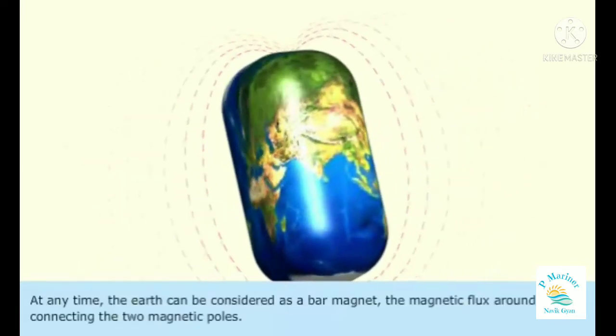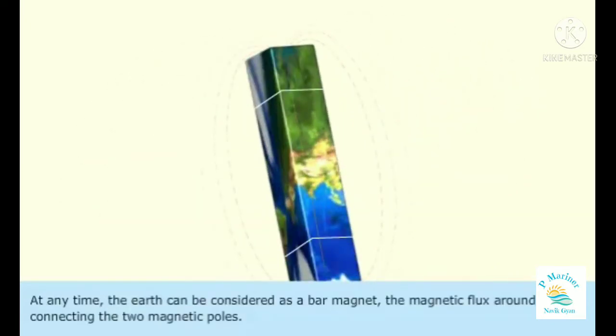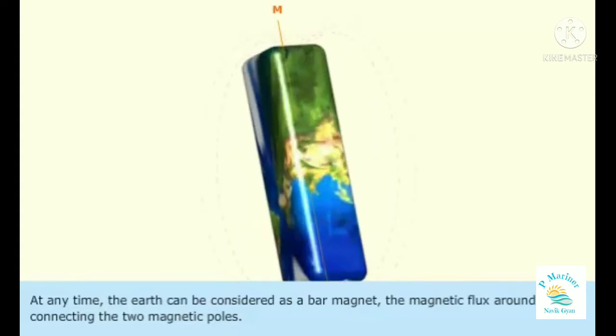At any time, the Earth can be considered as a bar magnet. The magnetic flux around it connects the two magnetic poles.